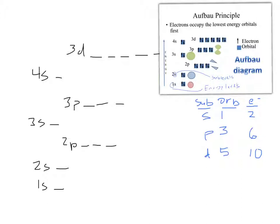What I drew in black is all you need to draw for Aufbau diagrams. Give me any atom on the periodic table — no higher than ten, please. Hydrogen! How many electrons does hydrogen have? One. So what does the Aufbau diagram look like for hydrogen? One arrow. Boom — I'm done. That's the Aufbau diagram for hydrogen.